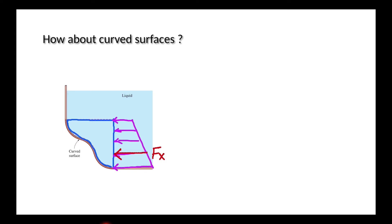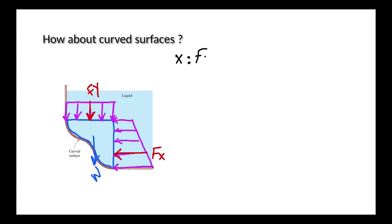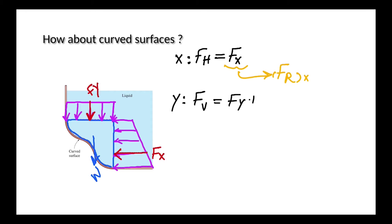On the top of our liquid block, we have a simple rectangular distribution since the depth is fixed. The resultant hydrostatic force in the vertical direction is applied to the middle of this distribution. The weight is also applied, which is always directed vertically. In the x direction, we have Fh (the horizontal force), which is equal to Fx — the horizontal component of Fr. In the y direction, Fv (the vertical force) is equal to Fy plus or minus W. Be careful about the sign, because sometimes Fy and W are in opposite directions.